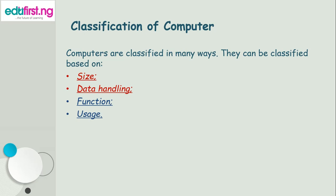Computers are classified in many ways. They can be classified based on: one, size; two, data handling; three, function; and four, usage. In part 1 of our class, we will be looking into classification of computer based on size and data handling. Then in part 2, we will treat classification of computer based on function and usage.